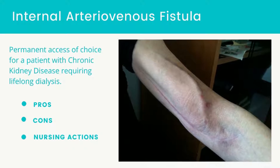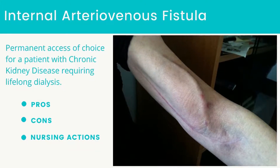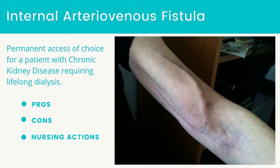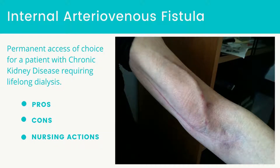An internal arteriovenous fistula is a permanent access of choice for a patient with chronic kidney disease requiring lifelong dialysis. The fistula is created surgically by anastomosis of a large artery and large vein in the arm. The flow of arterial blood into the venous system causes the vein to become mature and large. Maturity takes about 4-6 weeks, depending on the patient's ability to do hand-flexing exercises, such as ball squeezing, which helps the fistula to mature.